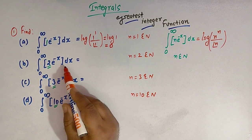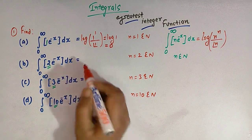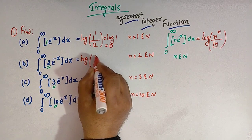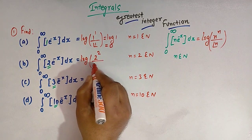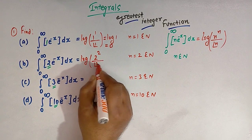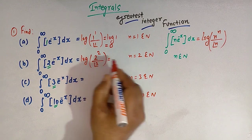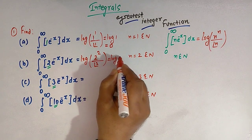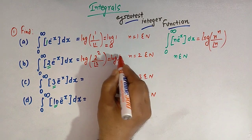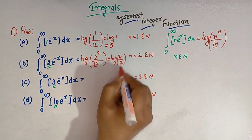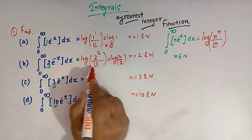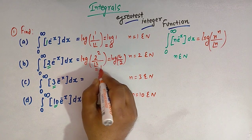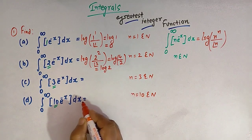In the second integral, n equals 2, so the value is log of 2 raised to 2 divided by factorial of 2. This gives log of 4 divided by 2. Since 2 squared is 4 and factorial of 2 is 2, this simplifies to log of 2.